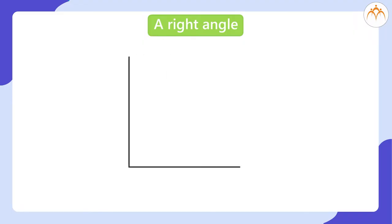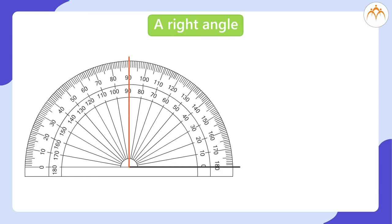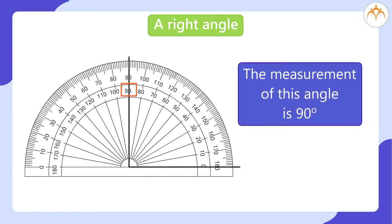A Right Angle. Let us match the baseline of the protractor and the horizontal arm of the angle to each other. Match the midpoint of the protractor and the vertex of the angle to each other. The vertical arm of the angle and the vertical line on the protractor should exactly match each other too. Now let us read the number on the head of the vertical line. It is 90. So the measurement of this angle is 90 degrees.